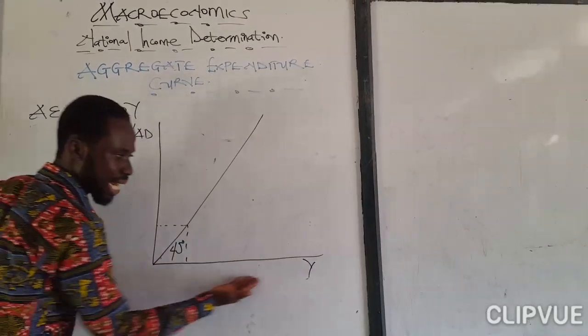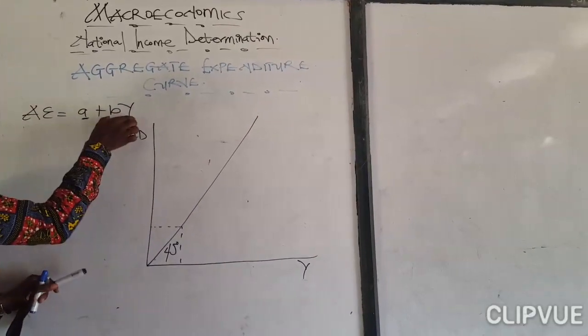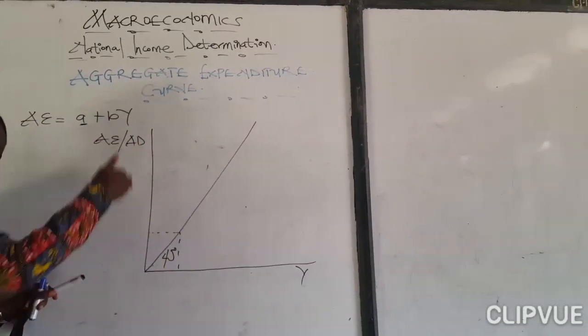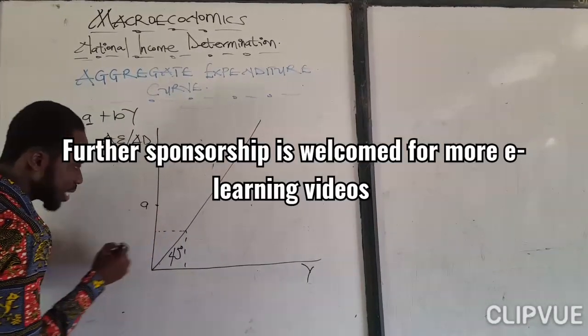in mathematics, when x is equal to zero, it is y intercept. So if y is equal to zero, it's y intercept. So it's a. So here is a.